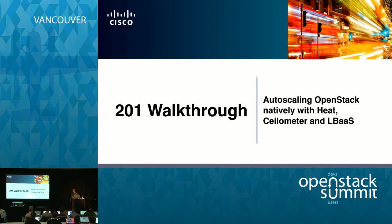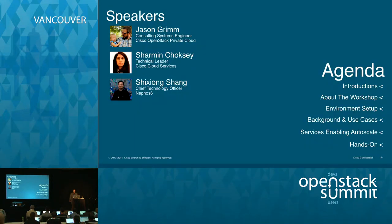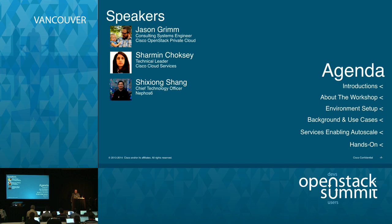Welcome everybody, my name is Jason Grimm, I'm a consulting systems engineer with Cisco. You are at the 201 walkthrough: Auto Scaling OpenStack Natively with Heat, Ceilometer, and LBaaS. Joining me today are Charmin Choksi and Shishang Shang, two of my partners — they'll introduce themselves when they come up for their sections. We're going to cover a quick introduction, workshop organization, environment setup, background and use cases, services enabling auto scale, and then the hands-on lab.